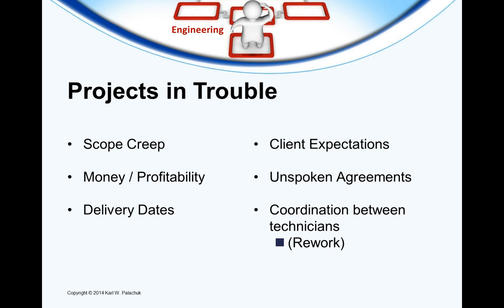The two ways we measure whether something is a failing project are the date and the money. The core problem is that clients don't want to pay for accurate estimates. So all of those things — scope creep, delivery date issues, rework — lead to projects that go over budget and over time. You've got to figure out how to solve those two problems.